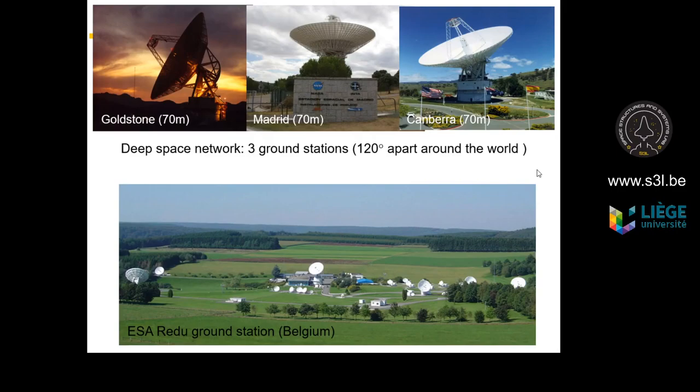Let me show you two different examples. First, in Redu in Belgium, small antennas are used for the Galileo constellation. Another example is the DSN — the Deep Space Network — which uses three huge antennas of 70 meters in diameter located in Goldstone, Madrid, and Canberra. Each antenna covers an angle of 120 degrees, so any probe anywhere in space can be in line-of-sight of one of the three antennas.